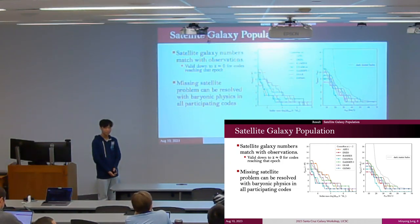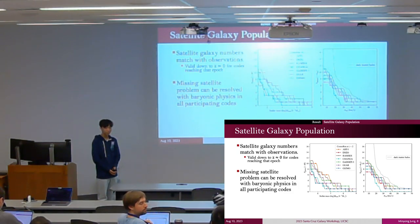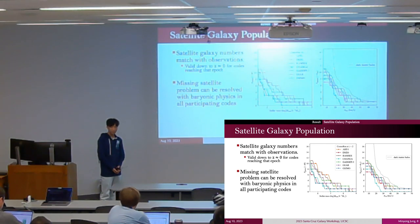I'm curious about if you have checked the velocity distribution of the satellites in simulation and in Milky Way, for example, the distribution of pericenter distance or tangential velocity, because those may contain some information about the efficiency of tidal disruption.